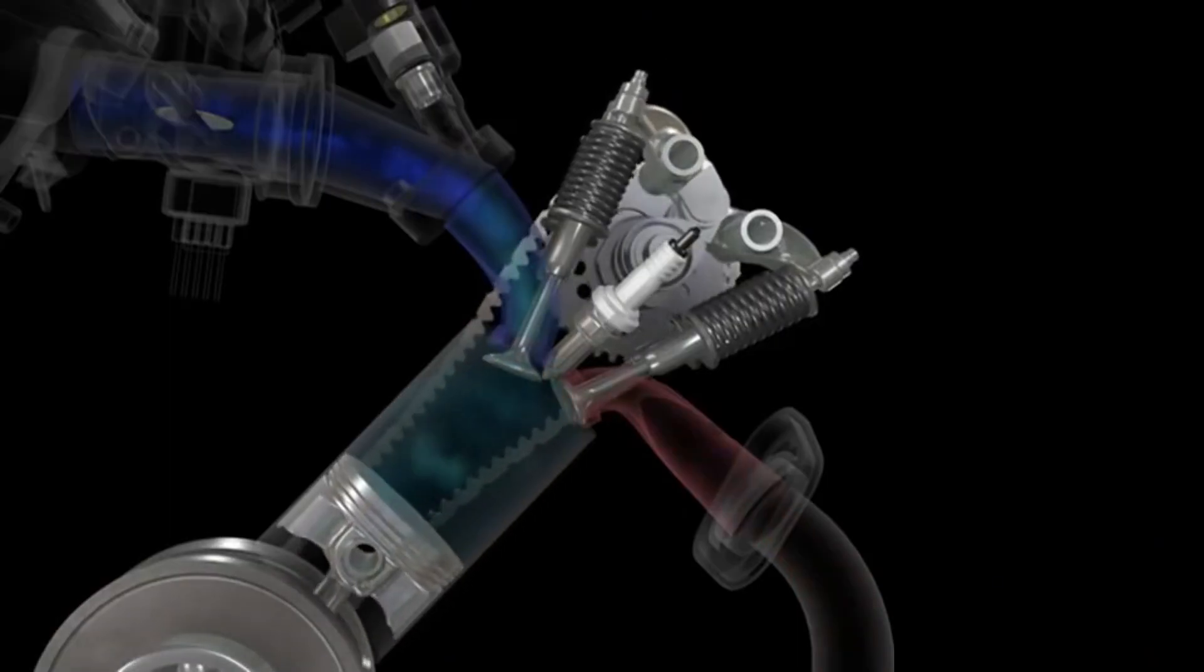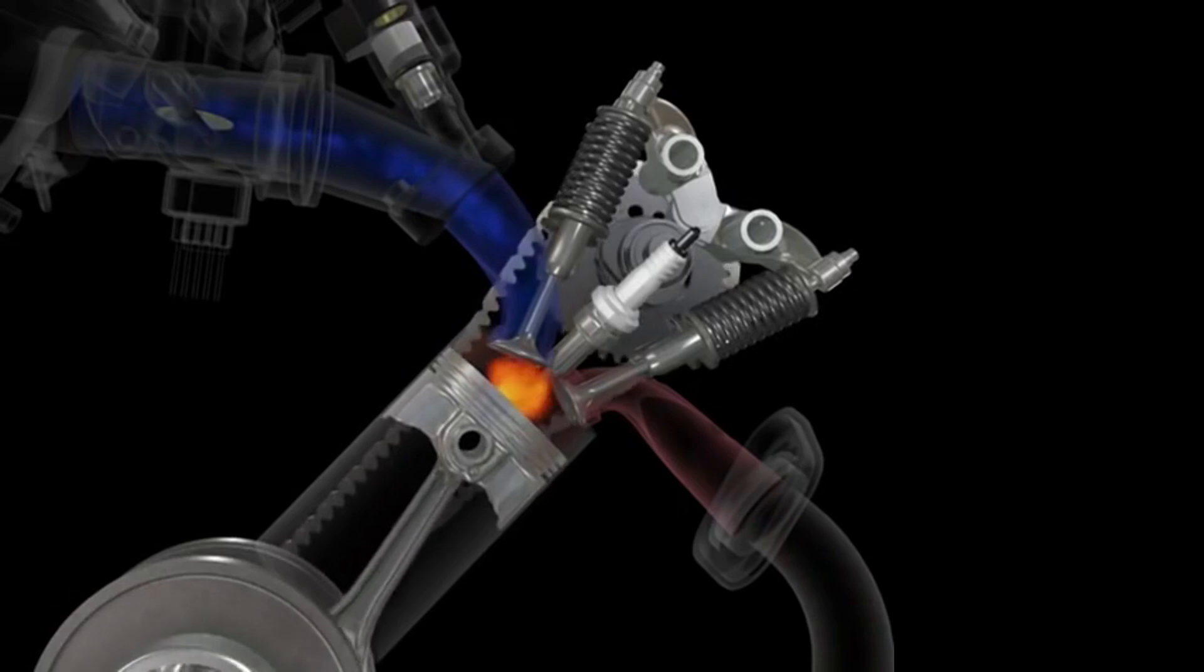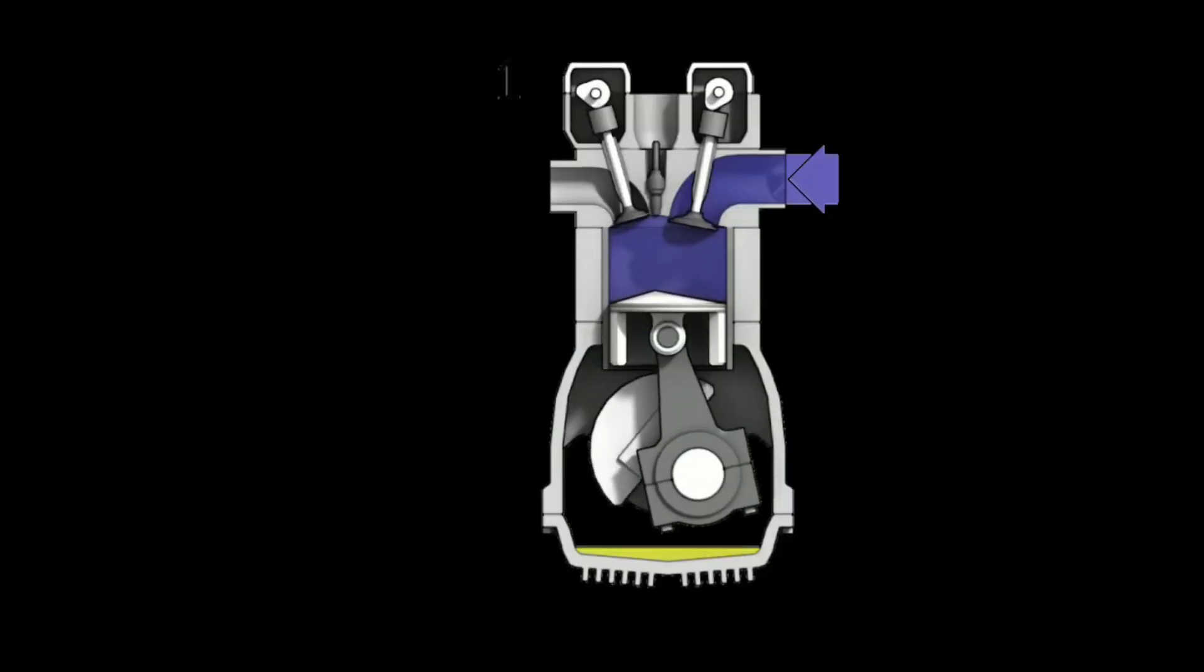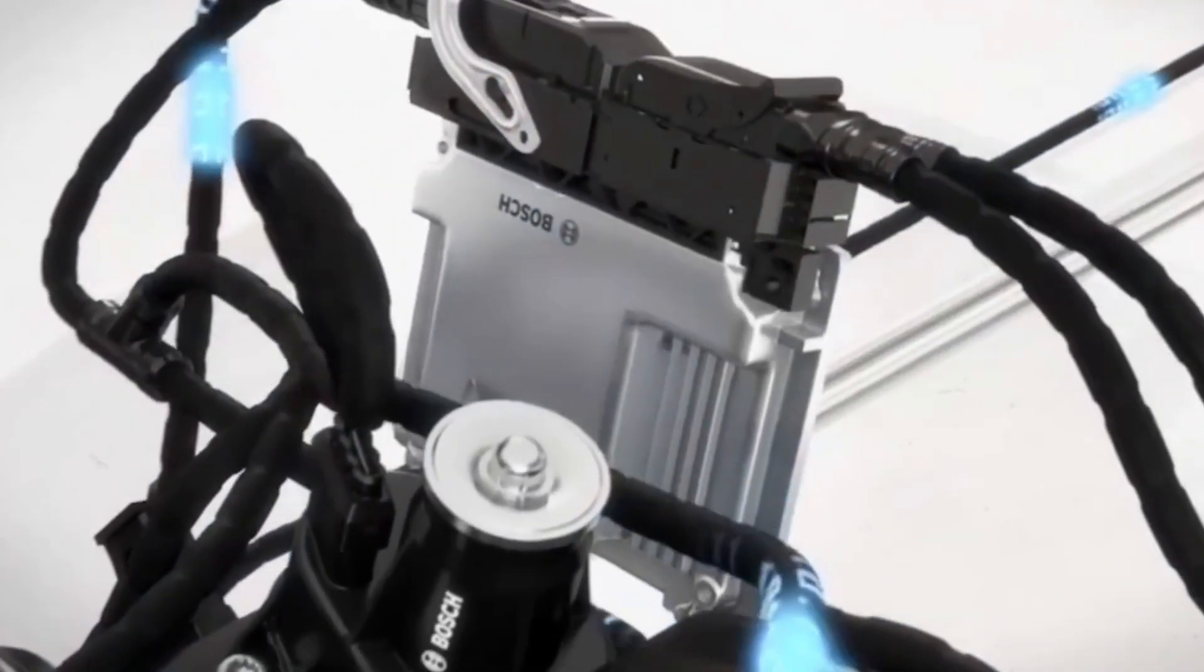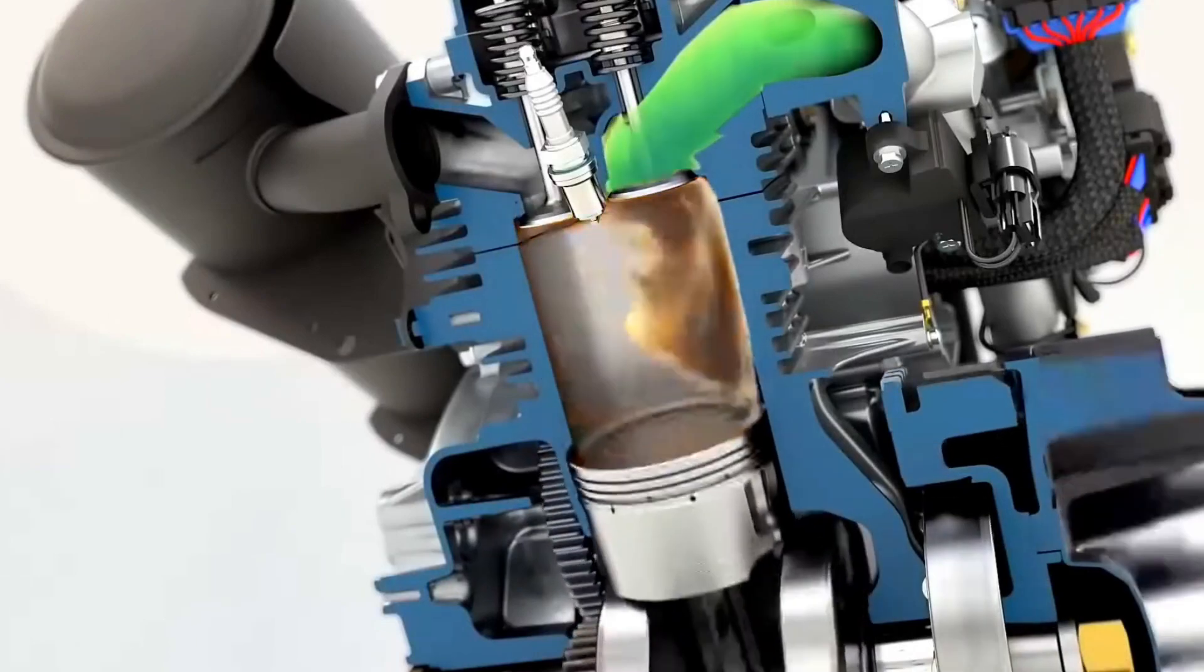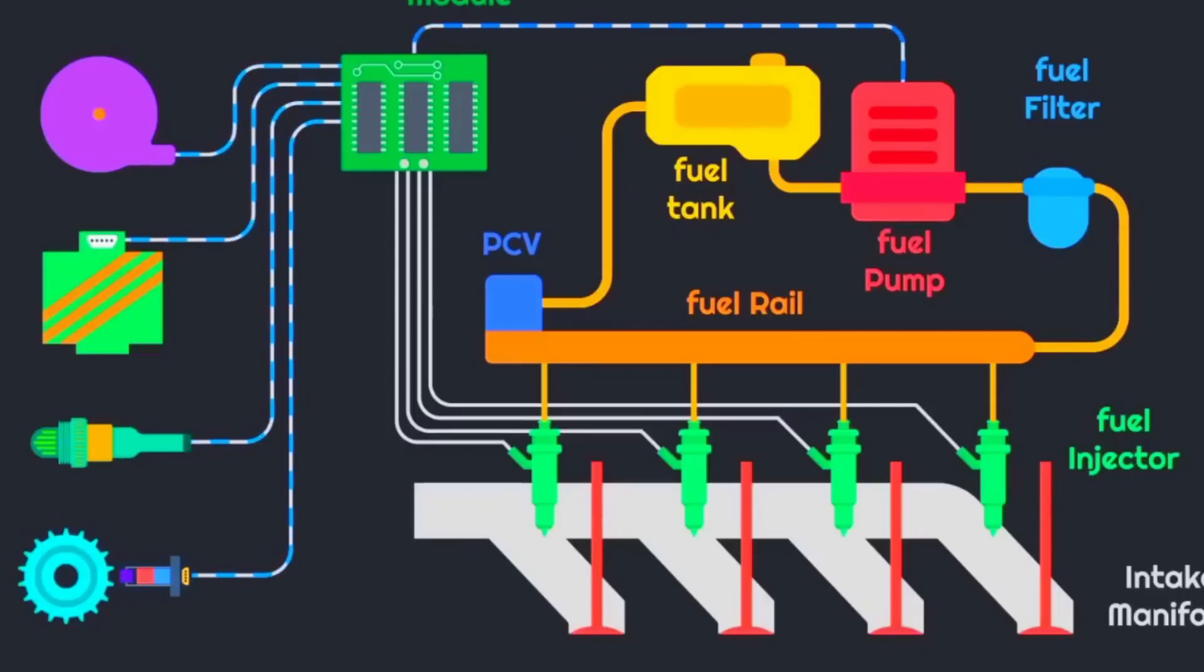Both are feeding your engine, but while the carburetor responds to airflow changes and relies on good old vacuum and physics, EFI commands a fleet of sensors, fuel pumps, and computer chips to get things just right. They're chasing the same goal, optimal combustion, but the routes they take feel like a dirt road versus a GPS-guided highway.